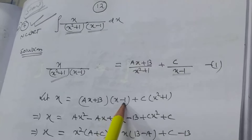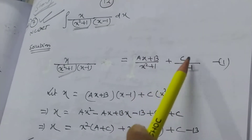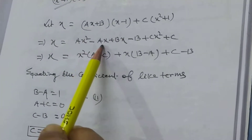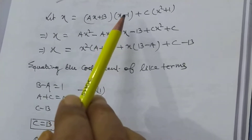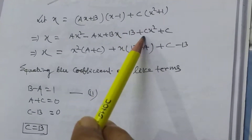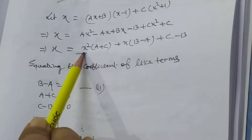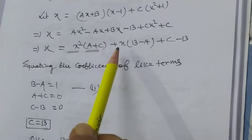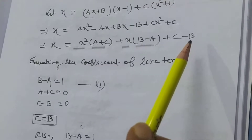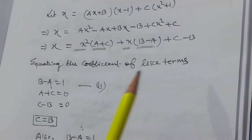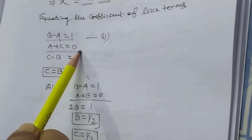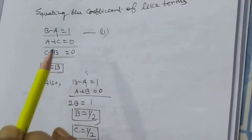Now, (ax + b)(x - 1) + c(x² + 1). It will be ax² - ax + bx - b + cx² + c. Taking x² common, it will be (a + c). Taking x common, it will be (b - a). Equating the coefficient of like terms: b - a = 1, a + c = 0, c - b = 0.